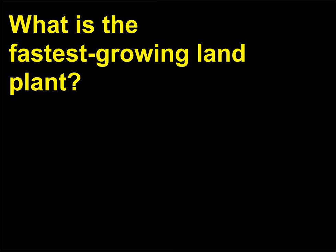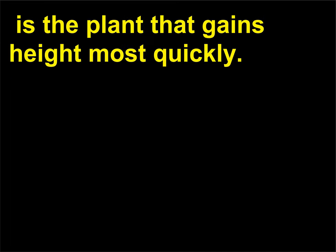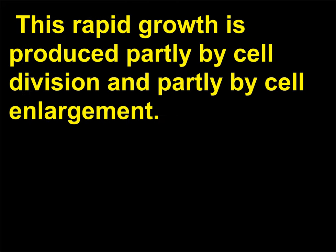What is the fastest growing land plant? Bamboo (Bamboo spp.), native to tropical and subtropical regions of Southeast Asia and islands of the Pacific and Indian Oceans, is the plant that gains height most quickly. Bamboo can grow almost 3 feet (1 meter) in 24 hours. This rapid growth is produced partly by cell division and partly by cell enlargement.